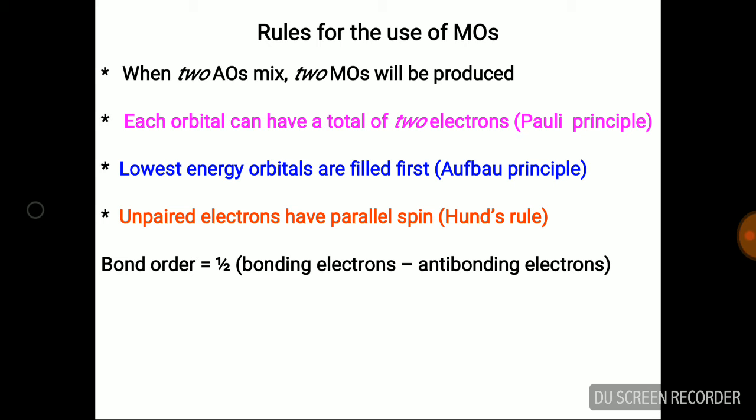Bond order is half of the difference between number of electrons in bonding molecular orbital and anti-bonding molecular orbital. Bond order determines the nature of bond between two molecular orbitals.